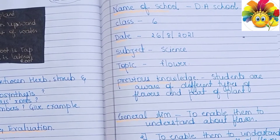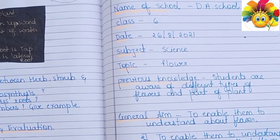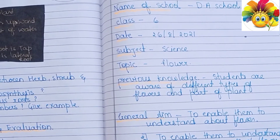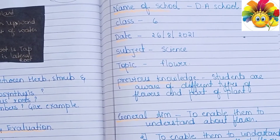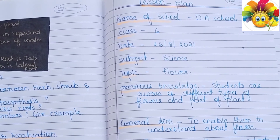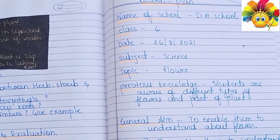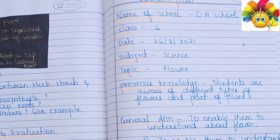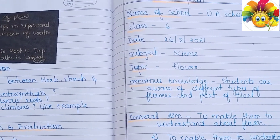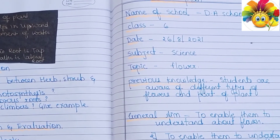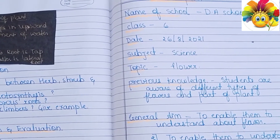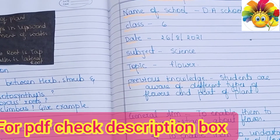This is a lesson plan on the topic 'Flower' for Class 6. The name of the topic is 'Getting to Know Plants,' so this can be considered a subtopic. Here we are going to explain everything about flowers to students, and you can see the format I have made for this lesson plan.